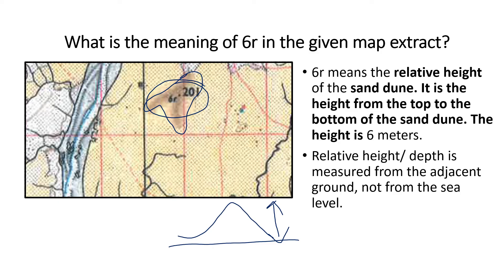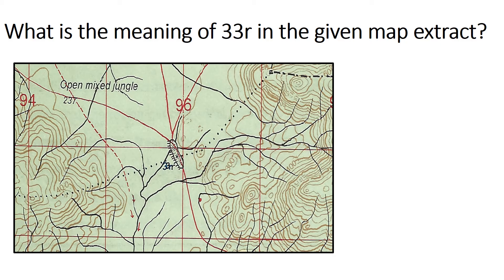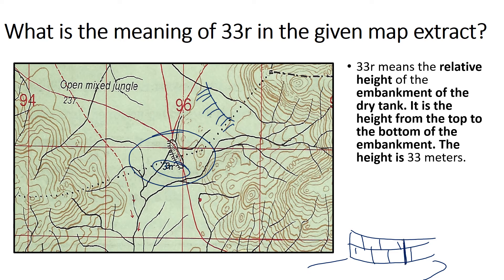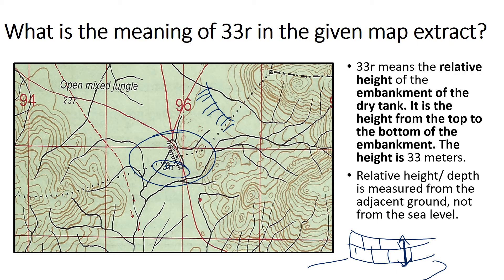Another example: what is the meaning of '33R' in the given map? Here '33R' is written outside a dry tank, and this tank has an embankment. So '33R' means the relative height of the embankment of the dry tank. It is the height from the top to the bottom of the embankment — the height is 33 meters. This is the height of the embankment right from top to bottom of the dry tank.